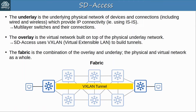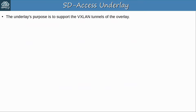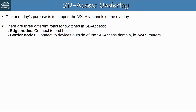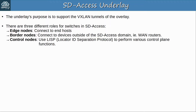Let me give a little more detail about both the underlay and overlay. The underlay's purpose is to support the VXLAN tunnels of the overlay. To make a virtual network of tunnels, the devices first need to be connected and able to reach each other, so the underlay is very important. There are three different roles for switches in SD Access: edge nodes, which are switches that connect to end hosts like a traditional access layer switch; border nodes, which connect to devices outside of the SD Access domain, for example connecting to a WAN router; and control nodes, which use a protocol called LISP — Locator ID Separation Protocol — to perform various control plane functions. Just know that LISP is used for the control plane of SD Access.